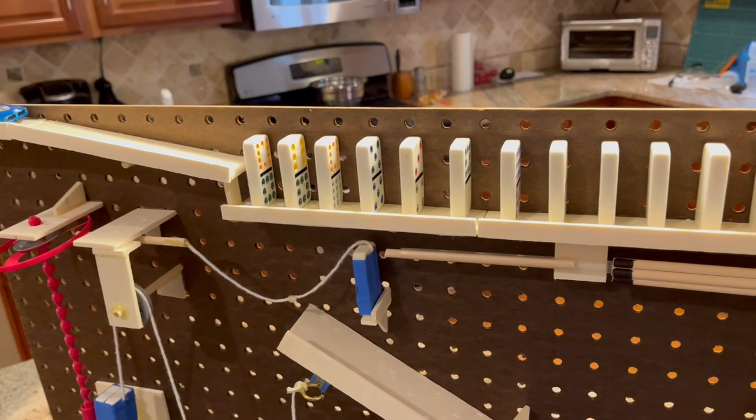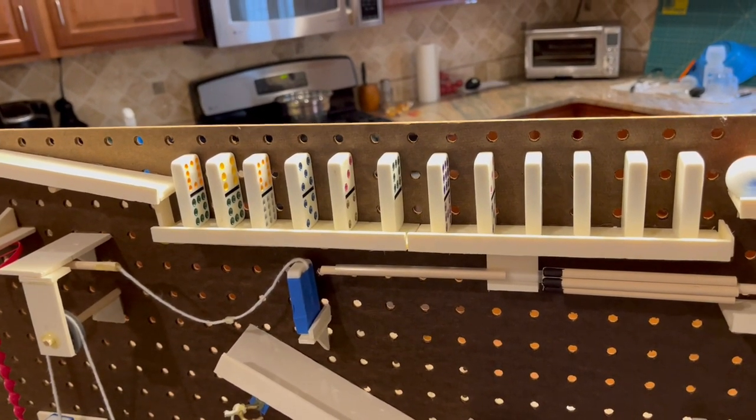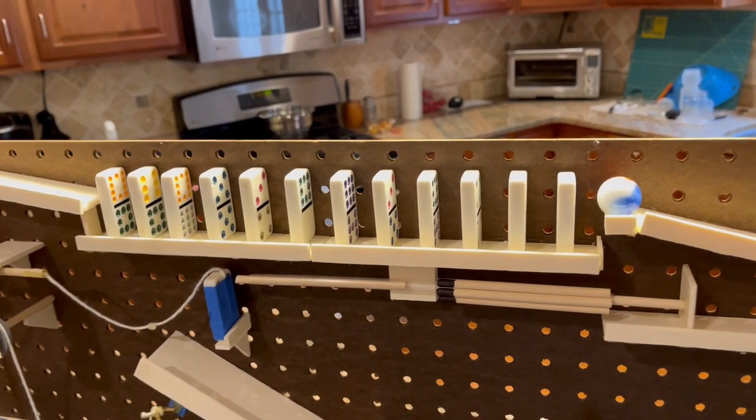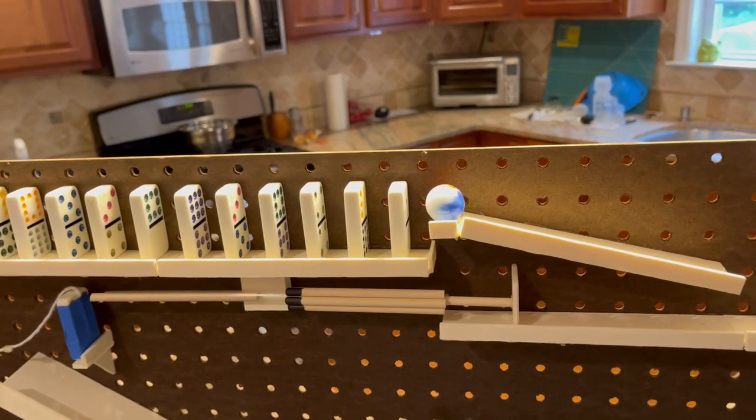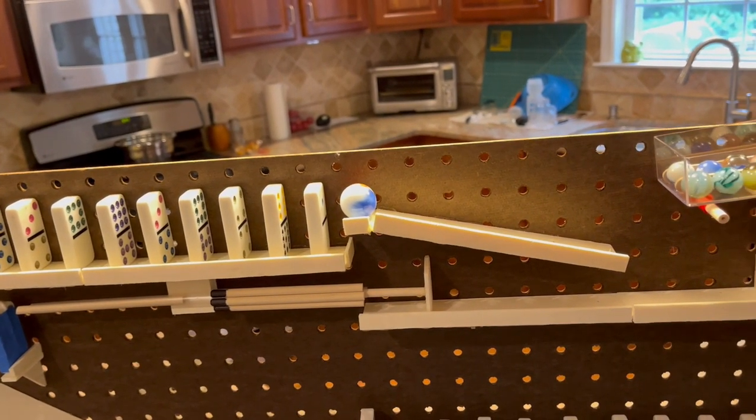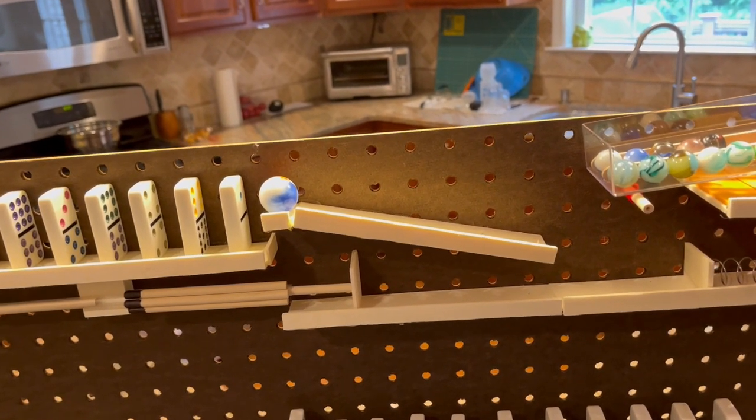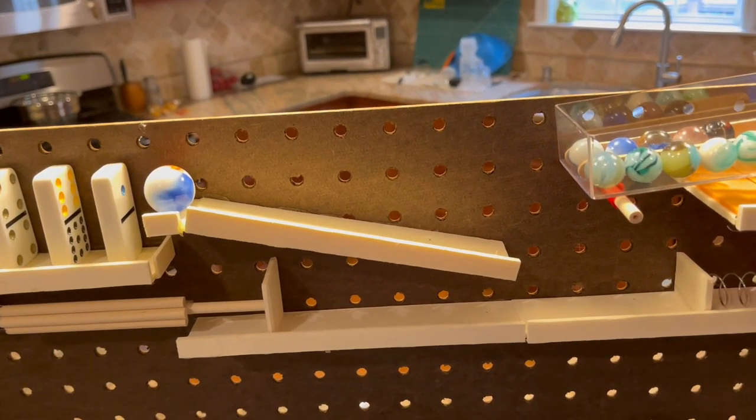As each domino falls, it transfers energy to the next domino in the sequence. The marble prior to its movement is at rest on a small indented platform to hold the marble in place. When the last domino falls, it hits the marble, accelerating it forward, sending it down another inclined plane.